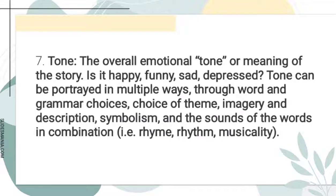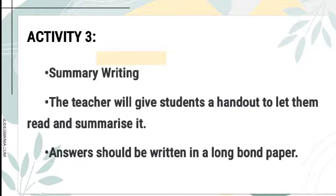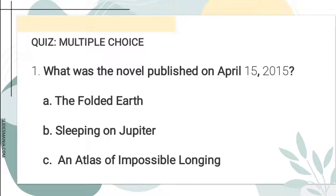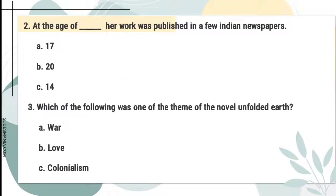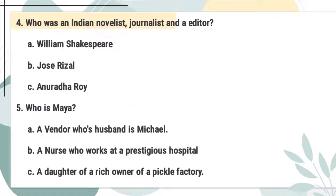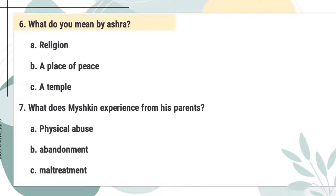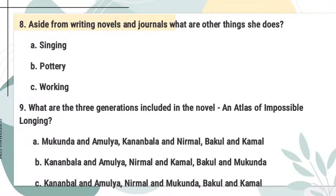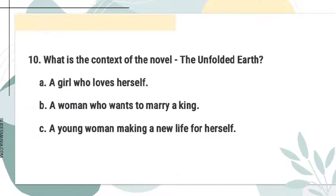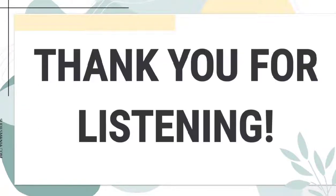Since we've talked about literary elements, it's now your turn to find them by doing summary writing — this will be Activity Three. Let's now proceed to the assessment of your learnings. You have to answer a 10-item quiz and send your answers through our GC. For your assignment, you have to research and find one notable writer in Asia. Goodbye class, and thank you for listening. Goodbye everyone!